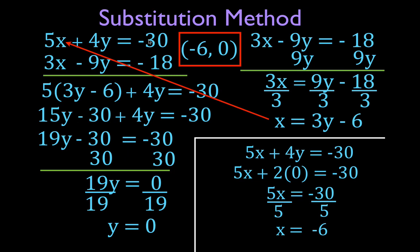I'm not going to go through the full check, but let's just check it quickly. In each case, y is 0 and x is minus 6. 4 times 0 is 0; 5 times minus 6 is minus 30, and minus 30 equals minus 30. Minus 9 times 0 is 0; 3 times minus 6 is minus 18, and minus 18 equals minus 18. There you have it. That is how you solve systems of linear equations using the substitution method: solve either of the equations first for either x or y.